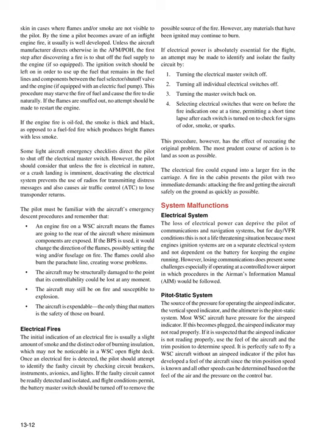Electrical fire: The initial indication of an electrical fire is usually a slight amount of smoke and a distinct odor of burning insulation. Once detected, the pilot should attempt to identify the faulty circuit by checking circuit breakers, instruments, avionics, and lights. If the faulty circuit cannot be readily detected and isolated, the battery master switch should be turned off to remove the possible source of the fire. However, any materials that have been ignited may continue to burn. To isolate the faulty circuit: (1) Turn the electrical master switch off. (2) Turn all individual electrical switches off. (3) Turn the master switch back on. (4) Select electrical switches one at a time, permitting a short time lapse after each to check for odor, smoke, or sparks. The most prudent course of action is to land as soon as possible. A fire in the cabin presents the pilot with two immediate demands: attacking the fire and getting the aircraft safely on the ground as quickly as possible.